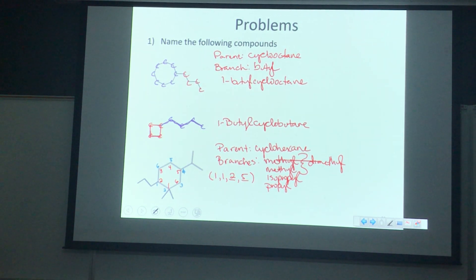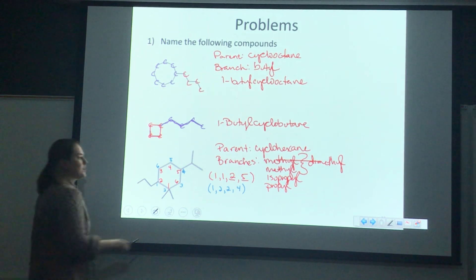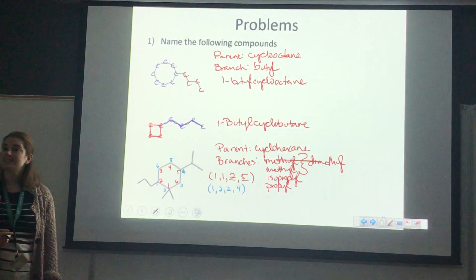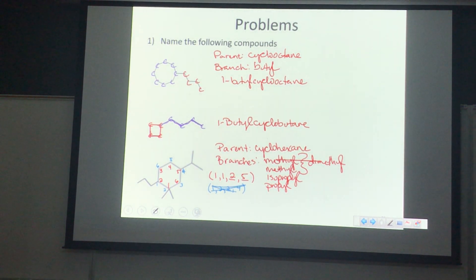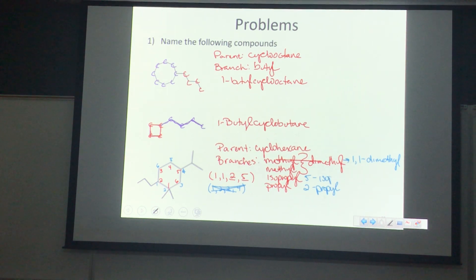Let's do the little chicken structure at the bottom. Who's going to be the parent? The cyclic structure — it has six carbons, so that's cyclohexane. Don't forget the cyclo. Let's list our branches: the two at the bottom are methyl groups — that gives us dimethyl. And the little snake right here is isopropyl — one, two, three carbons in that branch, connected by the center carbon.